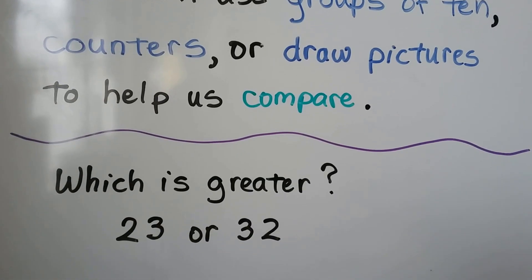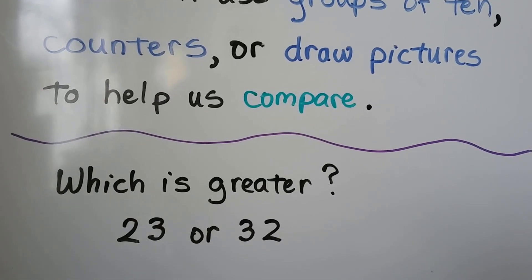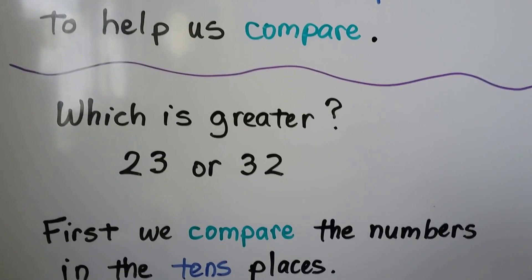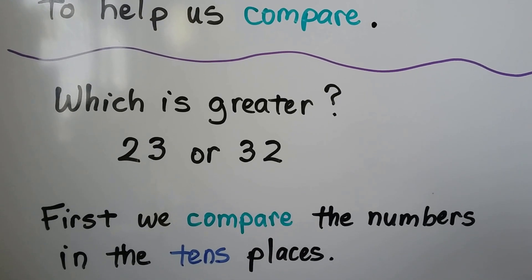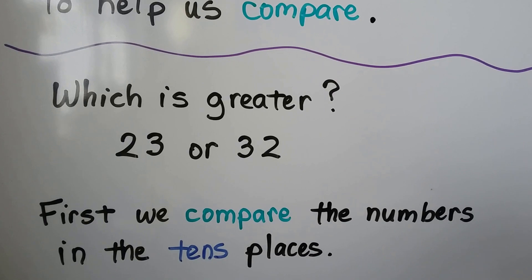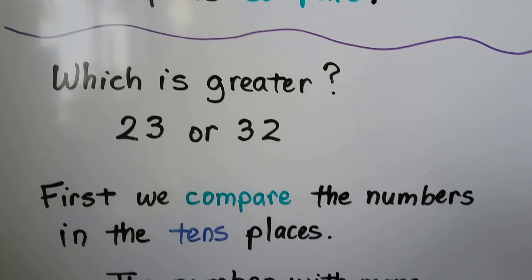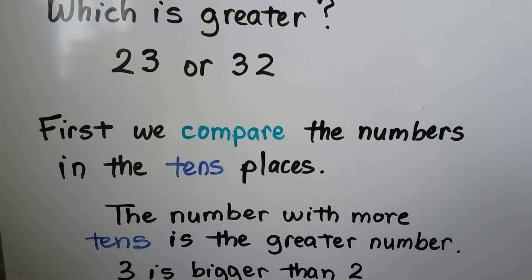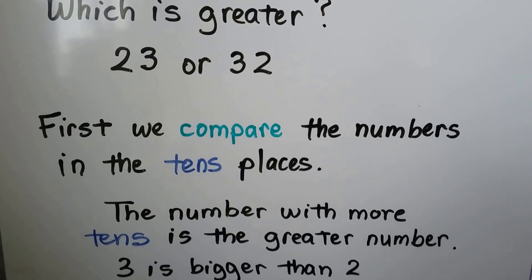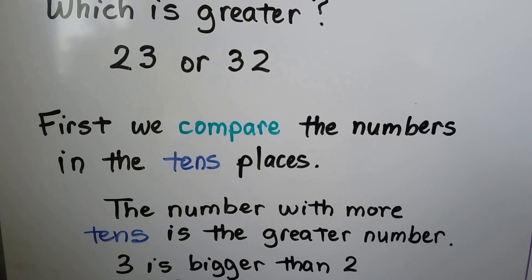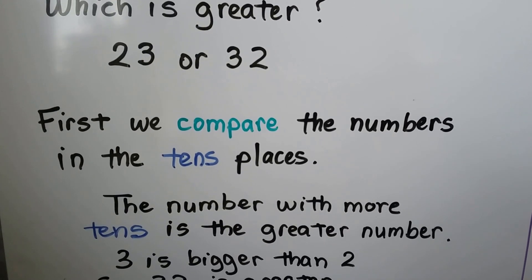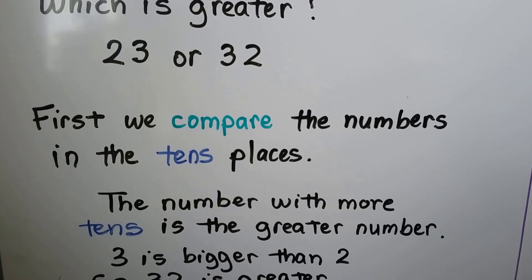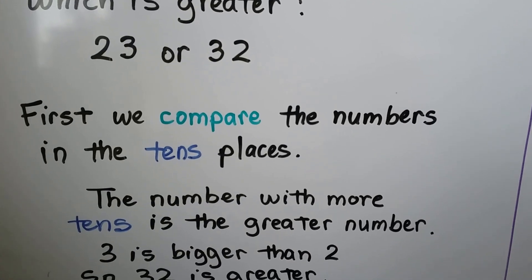Which is greater, 23 or 32? First, we compare the numbers in the tens place. The number with more tens is the greater number. 3 is bigger than 2, so 32 is greater — it has more tens.